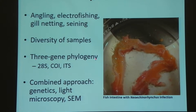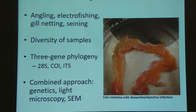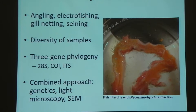The genetics we're going to be doing is a three-gene phylogeny, looking at three different molecular marker genes — CO1, which is a common barcoding gene, and two others, 28S and ITS. We'll combine that with morphological work in light microscopy and scanning electron microscopy.